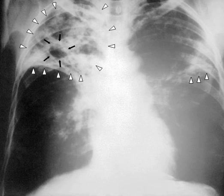About 10% of latent infections progress to active disease which, if left untreated, kills about half of those infected. The classic symptoms of active TB are a chronic cough with blood-containing sputum, fever, night sweats, and weight loss. It was historically called consumption due to the weight loss. Infection of other organs can cause a wide range of symptoms.